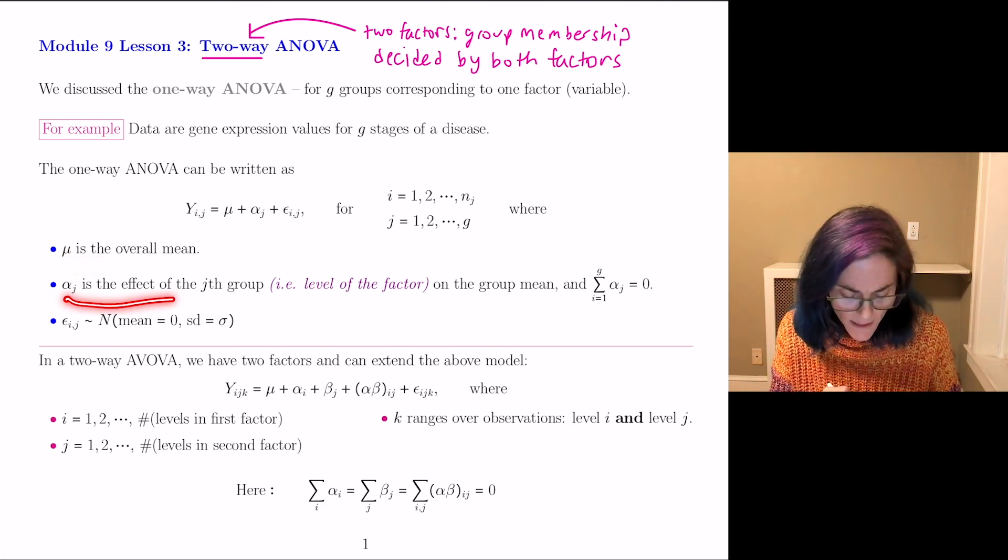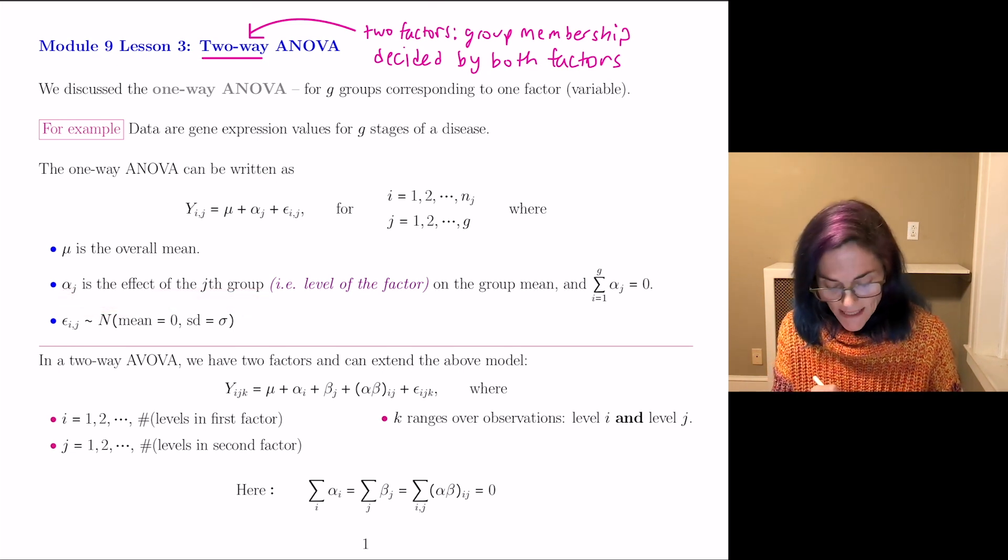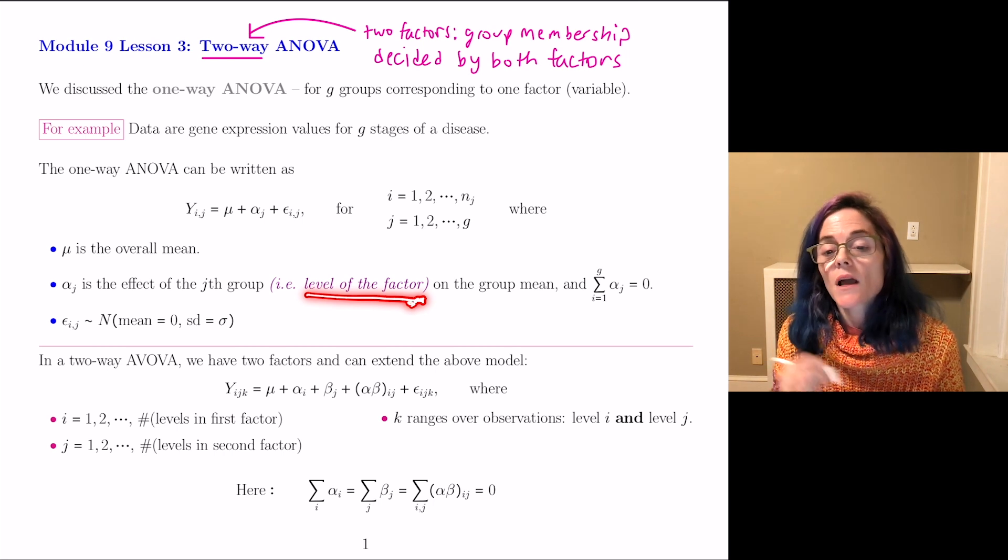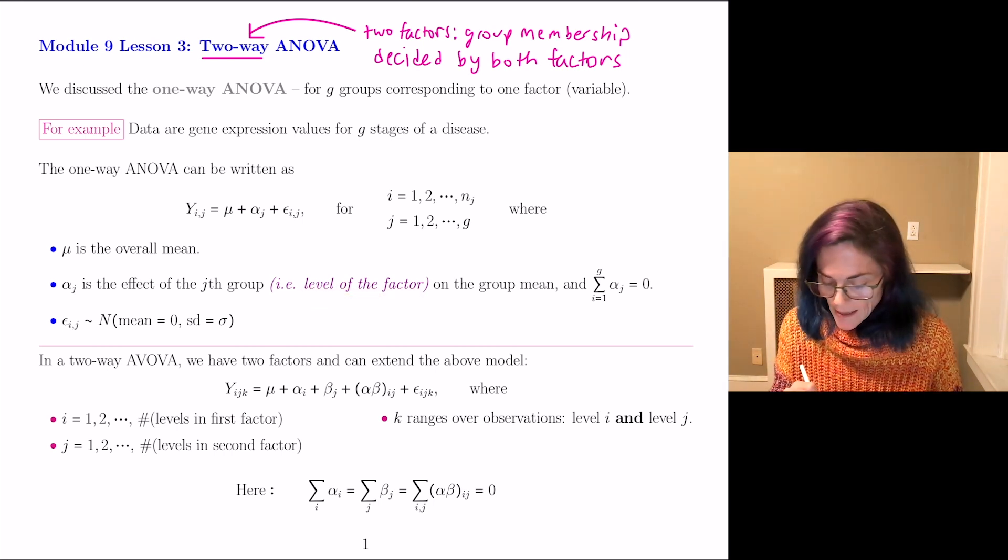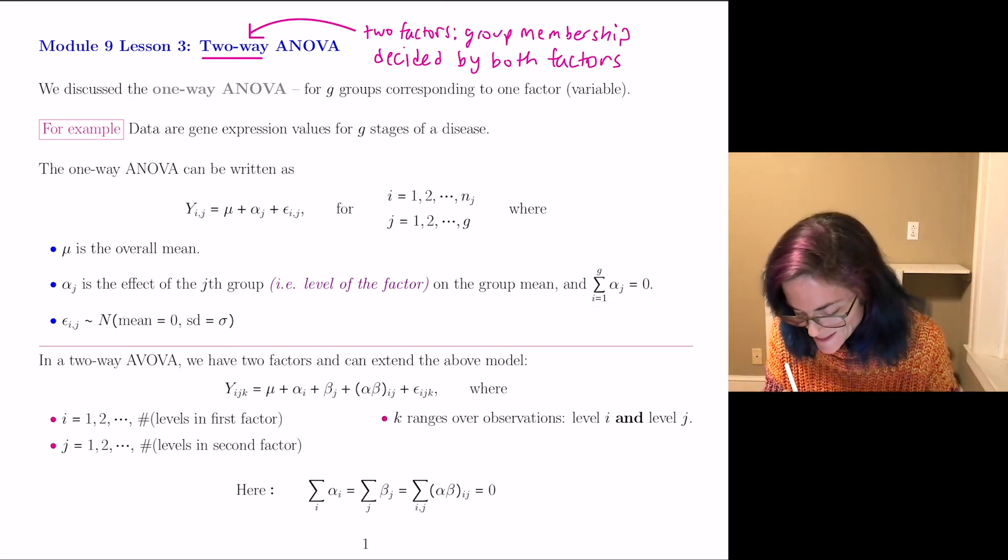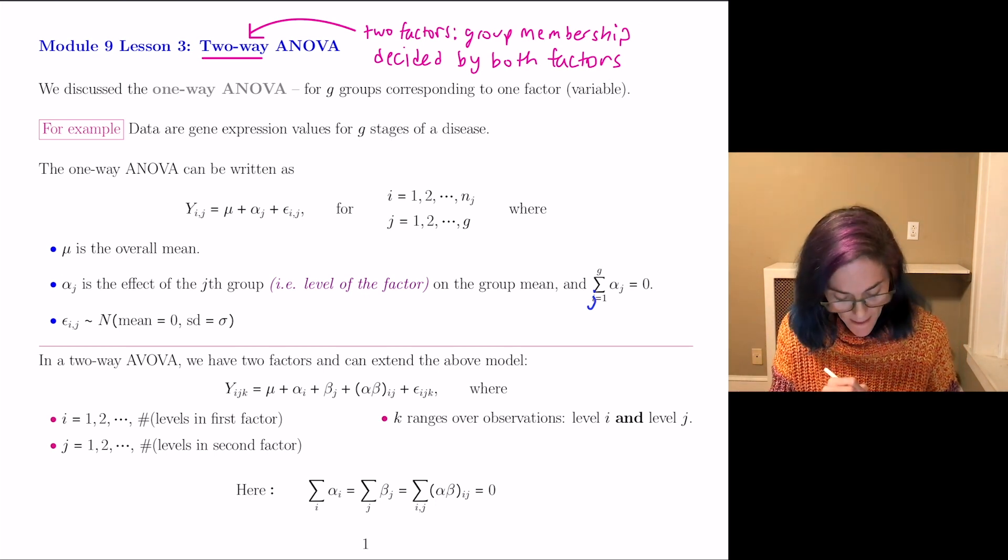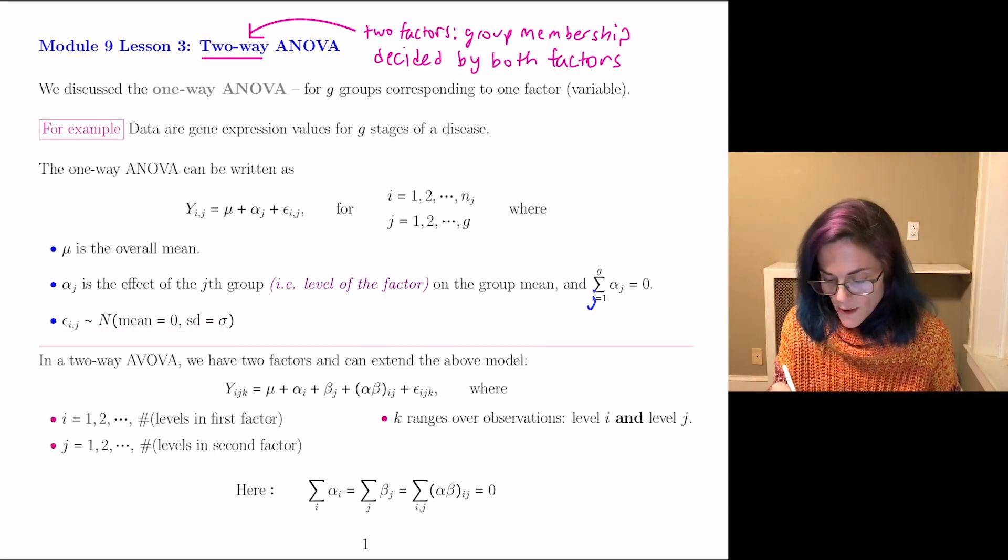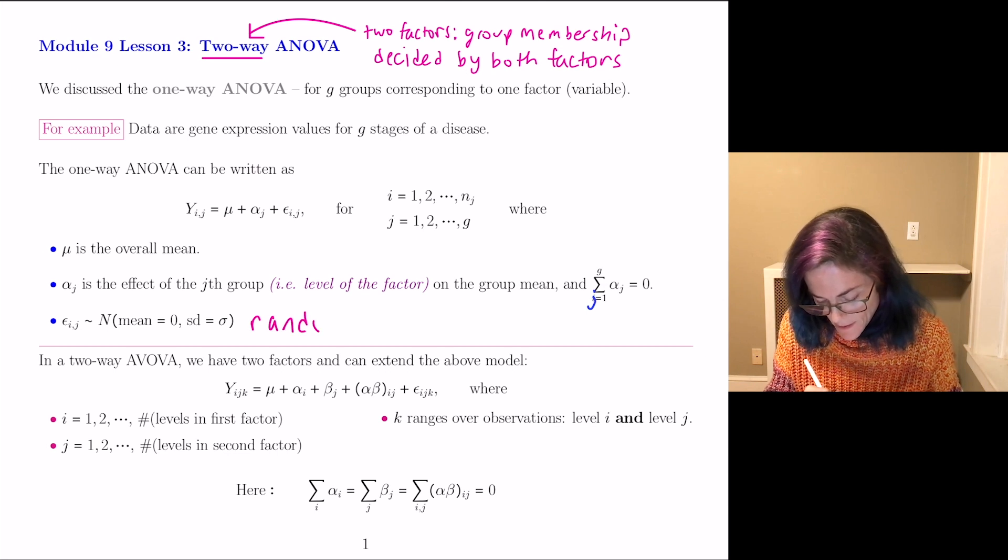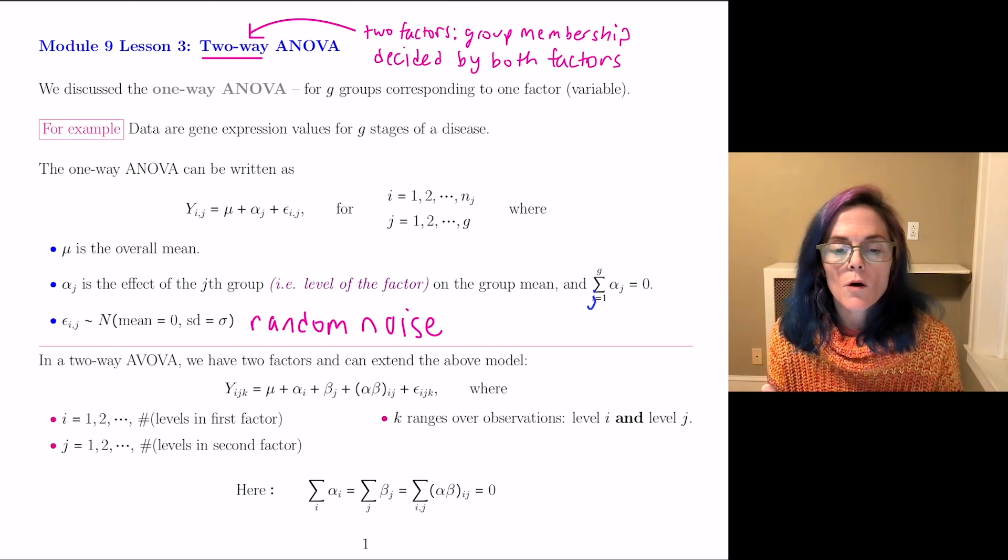this μ is the overall mean of all capital N observations. And then α_j is the effect of the j-th group. Another way to say that is the j-th level of the factor on the group mean. And the α_j's satisfy this sum should go from j equals one to G of α_j equals zero. The ε_ij's are random noise distributed as a normal random variable, mean zero, and standard deviation σ.